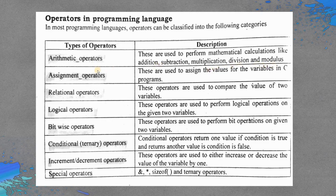The assignment operator is used to assign the value of a variable in C programs — it actually assigns a value into a variable. The relational operator is used to compare the value of two variables.